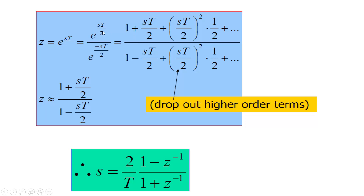We expand using the exponential series and drop all higher order terms. We are then left with 1/(1 + sT/2) and 1 - sT/2 in the numerator. Solving further, we get s = (2/T) * (1 - z^(-1)) / (1 + z^(-1)). This is the bilinear transformation formula.